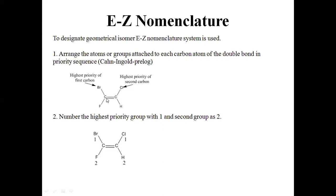For each double-bond carbon, consider the groups attached. The group with the higher atomic number gets first priority and the other gets second priority. For example, in a molecule where one carbon has bromine and fluorine, and the next carbon has chlorine and hydrogen: bromine has a higher atomic number than fluorine, so bromine gets first priority and fluorine second. Chlorine has a higher atomic number than hydrogen, so chlorine gets first priority and hydrogen second.